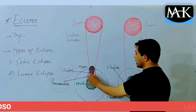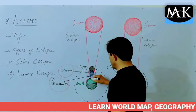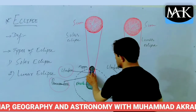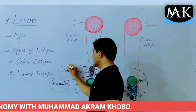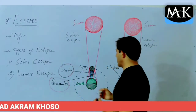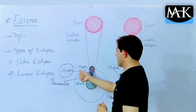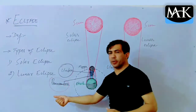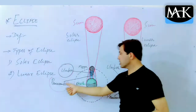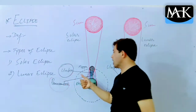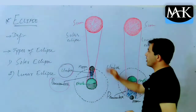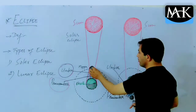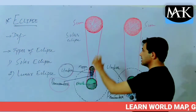In the solar eclipse diagram, we have two areas. The area where there is complete darkness and complete shadows is known as umbra. These names are also asked in exams. Umbra is the area of complete shadows and complete darkness. The area of partial shadow and partial darkness is known as penumbra. So umbra is complete darkness and penumbra is partial darkness.